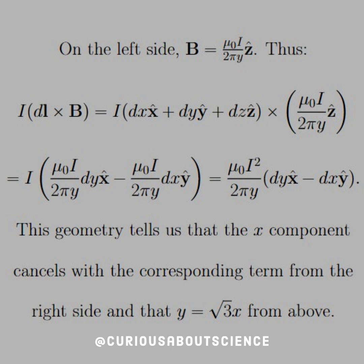On the left side, the B field of that line is just mu naught I over 2 pi Y in the Z-hat direction. We haven't defined what Y is yet, so we'll save that for later. We can take care of the cross product — with DL going in all three coordinate directions, and B occurring only in the Z direction, the cross product simplifies to: B dY X-hat minus B dX Y-hat, because everything else is zero and cancellations occur.